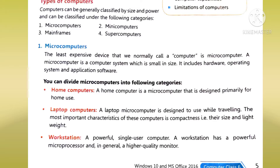Types of computers based on size and power include microcomputer, mini computer, mainframe computer, and supercomputers. Types of computers based on work include digital computer, analog computer, and hybrid computer. In this chapter we will study based on size and power.